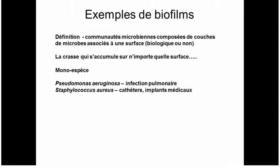Some biofilms can be mono-species: one bacterium colonizes a surface and synthesizes an exopolymer where they live. These can be medically very important. Pseudomonas aeruginosa is a lung pathogen, very dangerous for people with cystic fibrosis — one of its virulence mechanisms is to produce a biofilm that makes it very difficult to expel bacteria when coughing.